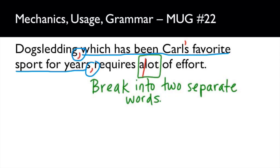You're seeing the pattern here. Carl's, just like Ariel's in the last sentence, needs the apostrophe-s to show possession. And then 'a lot' — it throws folks off — it is two words. Think of it like: a road, a car, a lot. A lot of something is just two separate words — a car, a dog, a house, a lot. Just trust me on this one, break it into two separate words.